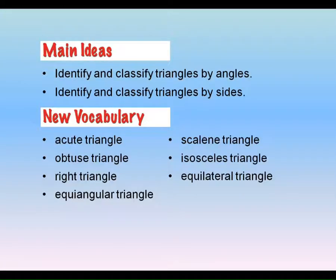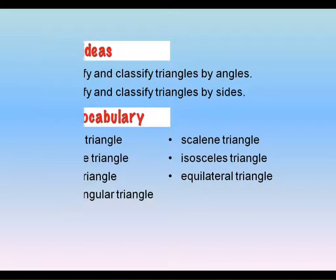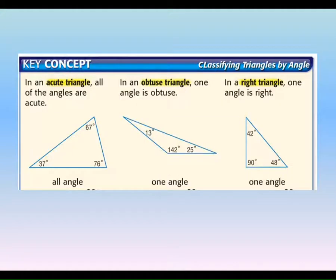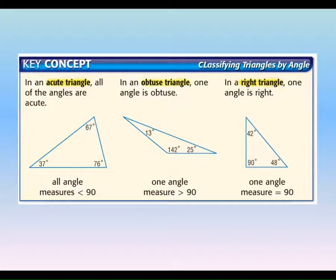Looking at this postulate sheet, here we have all this vocab which is what you listed. The first ones you found were acute, obtuse, and right triangles. So you should have had acute triangles — triangles where all the angles are acute — which means they are less than 90 degrees. And then an obtuse triangle has an angle that is obtuse, which means greater than 90.